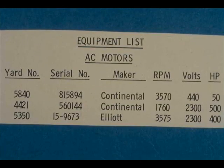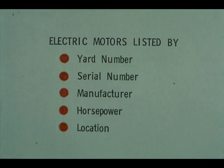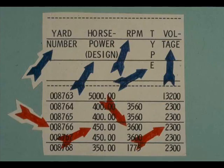Especially where computer time is available, mechanical or engineering groups may be able to provide electric motor lists containing very useful information. In one such situation, the computer is programmed to print motor lists by yard number, serial number, manufacturer, horsepower, and location. The first few columns of a typical yard number list are yard number, horsepower, RPM, motor type, and voltage. Yard number 8766, for example, is rated at 450 horsepower, makes 3,600 RPM, and requires 2,300 volts.